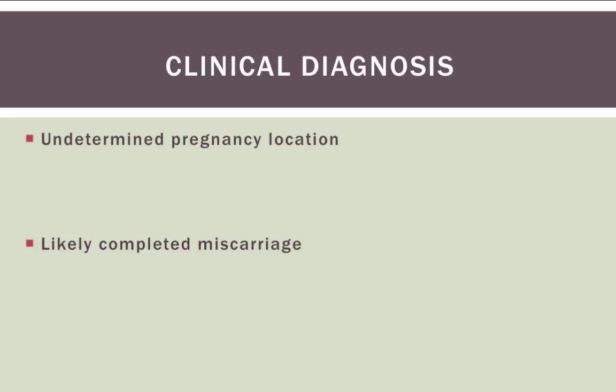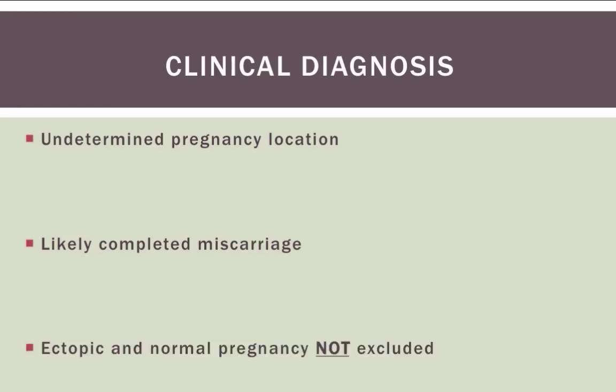Undetermined location. Now, because of the history - not because of anything in the ultrasound, but because of the history of heavy bleeding with clots and tissue - there's a fair chance this could be a miscarriage, and the patient should know that. Although don't tell them that is exclusively the diagnosis, and they should also know that an ectopic and even a normal pregnancy is not completely excluded.